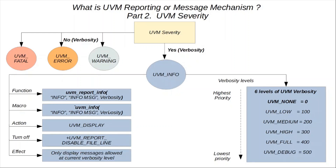Using the UVM_INFO macro makes the whole process more efficient, as it only elaborates the UVM_INFO messages that can be printed at the set verbosity level. So if verbosity is set to medium, it only processes none, low, and medium messages — not all messages.